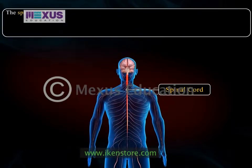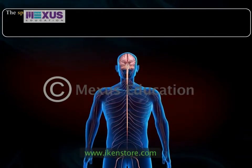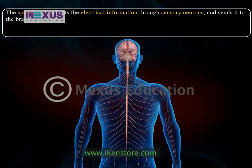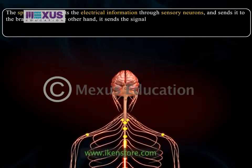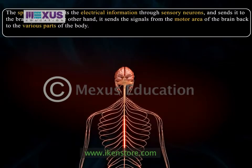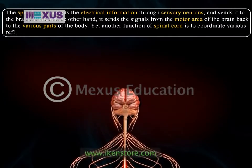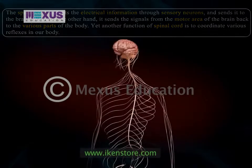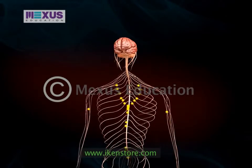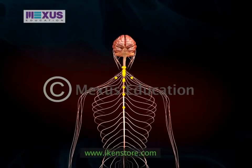The spinal cord helps in connecting the various organs of the human body to the brain. On one hand, it accepts the electrical information through sensory neurons and sends it to the brain. While on the other hand, it sends the signals from the motor area of the brain back to the various parts of the body. Yet another function of the spinal cord is to coordinate various reflexes in our body. Apart from neurons, brain and the spinal cord, nerves are also important structures because they carry impulses to and from the brain.